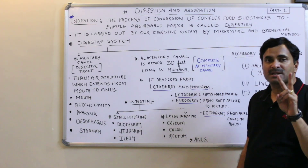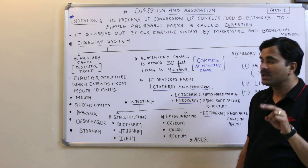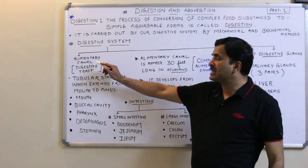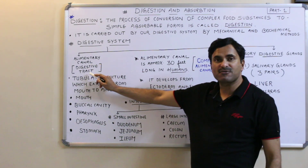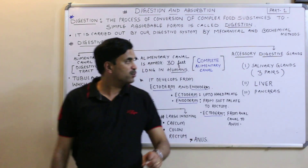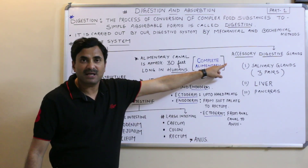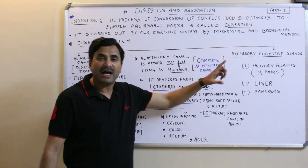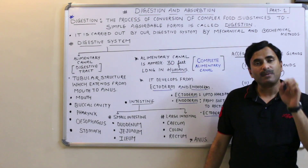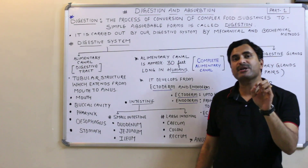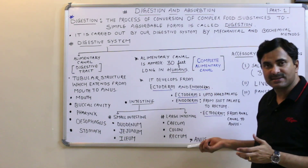Two important things we have to study in this system are the alimentary canal, also known as the digestive tract, and the accessory digestive glands. We can say that the digestive system equals the alimentary canal plus the accessory digestive glands.